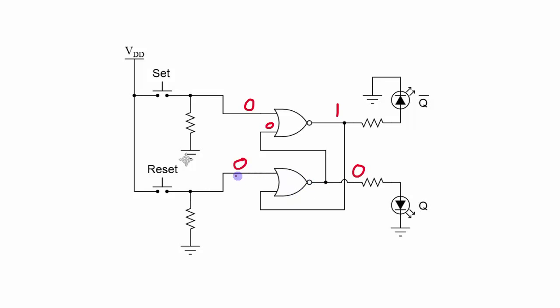At the bottom NOR gate, we have a 0 as one of the inputs, and the other input comes from the output of the top NOR gate. So we actually have a 1 here. 0 NORD with 1 gives us a 0. So as long as set and reset don't change, Q bar and Q are going to stay at 1 and 0.